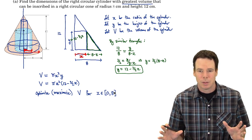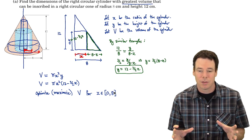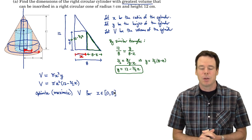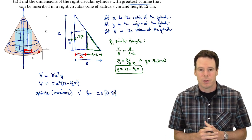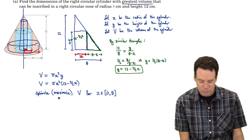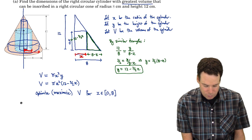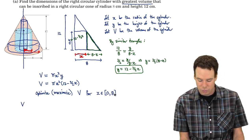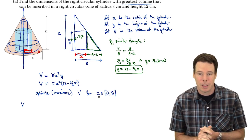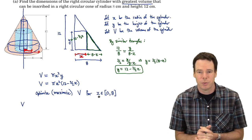We've now set up the problem. This is considered the precalculus part — we haven't done any calculus yet. We've come up with the function that we want to maximize and the interval to maximize it over. Now we go into calculus mode. To maximize, we need to find the critical points. This is a closed interval, so we find the critical points — those are potential candidates for the maximum — and we look at the endpoints and compare all values. This is the closed interval method.